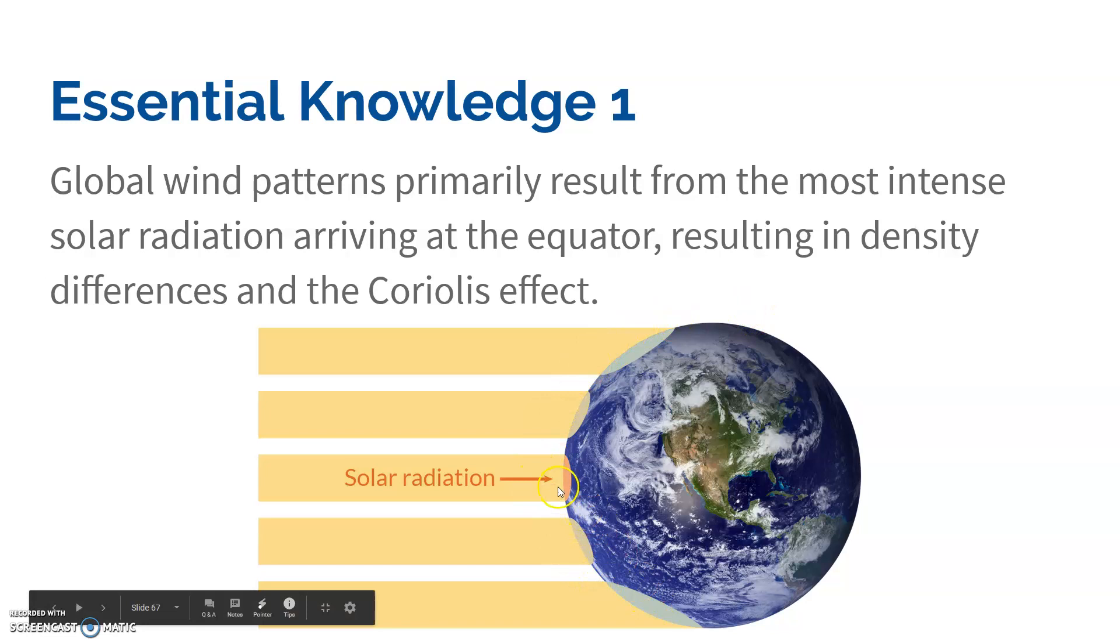Because sunlight is able to hit the equator directly, it heats it up more, versus at the poles, because of that curve, it hits it indirectly.